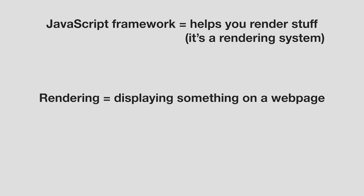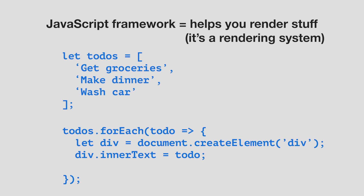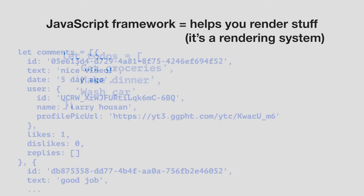Rendering means displaying something on a webpage, and it's the most common thing you do in web development. For example, if I want to render a button on my webpage, I can use this code — and this is just HTML, we don't even need JavaScript yet. Now let's say that I have a list and I want to render it on my webpage. We'll use JavaScript to loop through this list and for each item, create an HTML element and add it to the page. That's rendering using JavaScript.